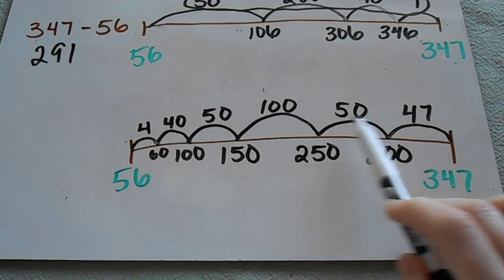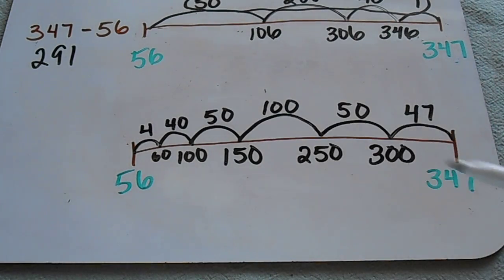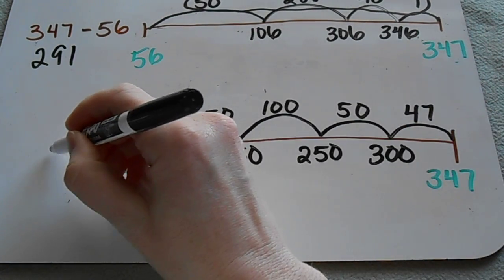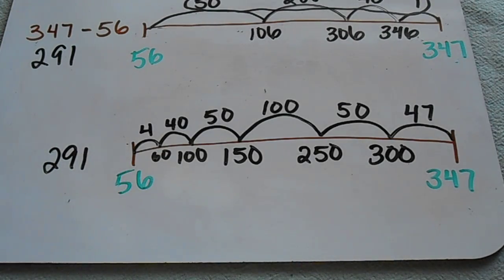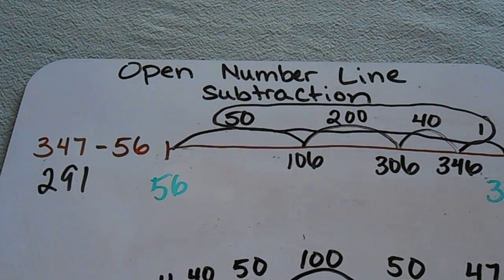So again, if I add all of these numbers up, all of my jumps that I made at the top, then I would get 291. So I hope that helps you to know how to do an open number line by using subtraction. You can also use this with addition. And please subscribe to my videos. Thanks a lot.